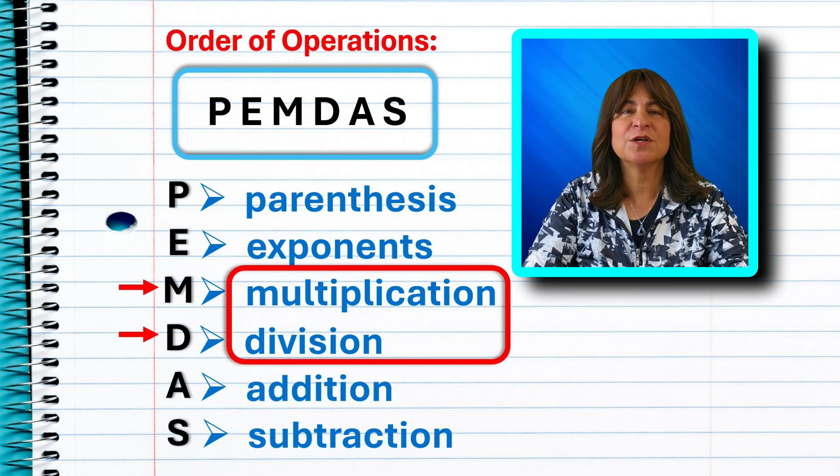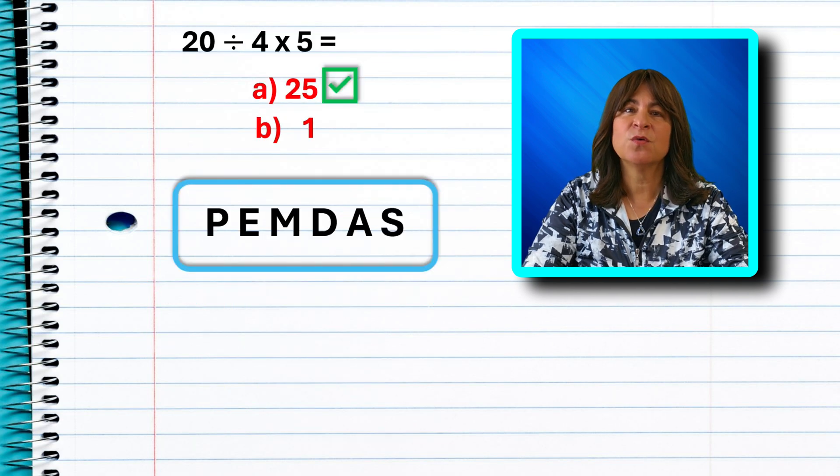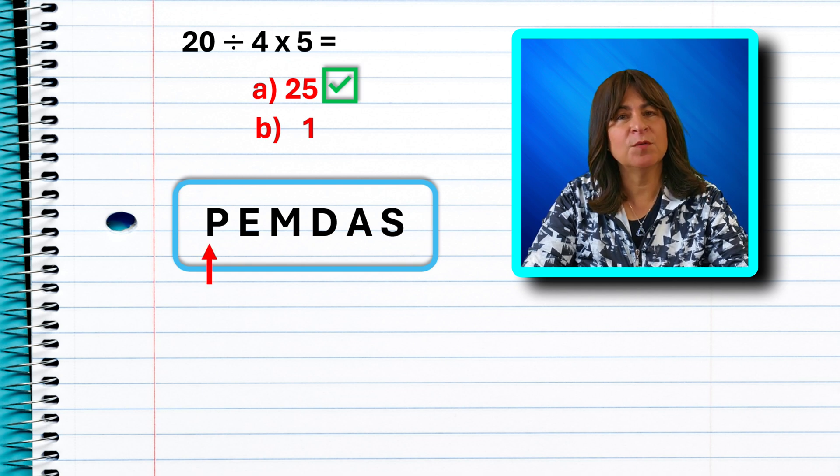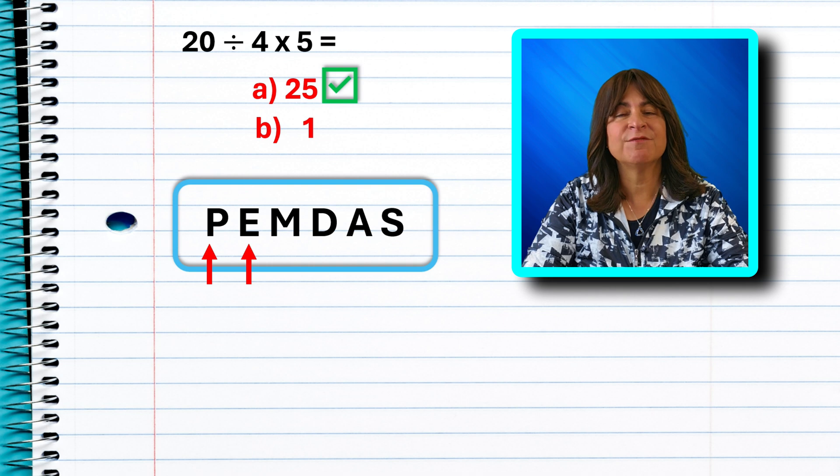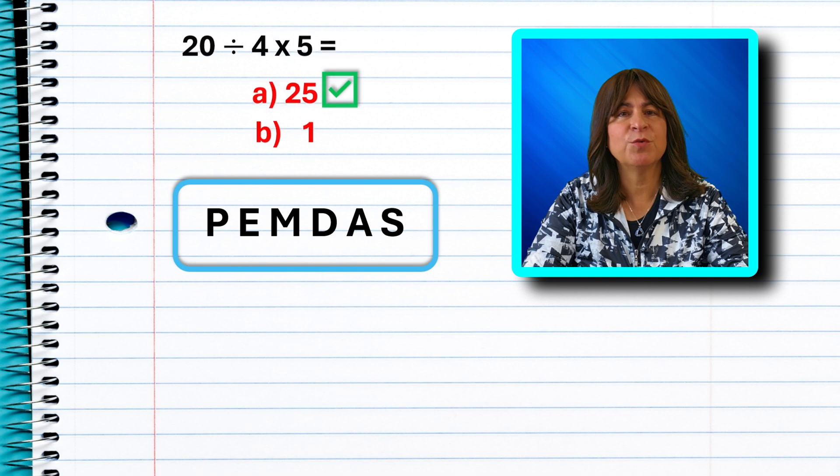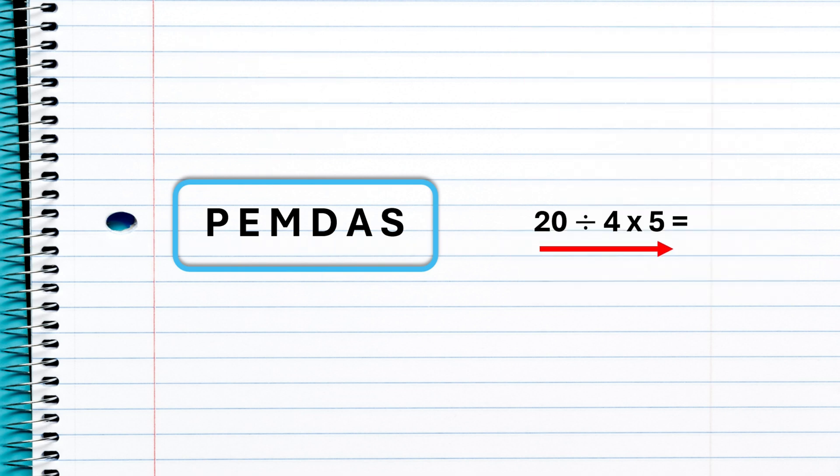So no, multiplication doesn't come before division just because the M is before the D in PEMDAS. And no, it isn't true that the order doesn't matter. There is only one correct answer to this problem, and that is 25. Why? Because in this problem, we don't have parentheses or exponents. So the next level is multiplication and division, which are equal. Except that we have to solve reading from left to right. And in this problem, reading from left, that means dividing first. 20 divided by 4 and then multiplying. So 20 divided by 4 is 5. Then multiply by 5, 5 times 5, and we get 25. And that is the correct answer. How many of you got that right?